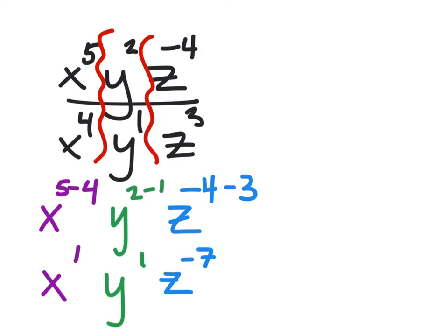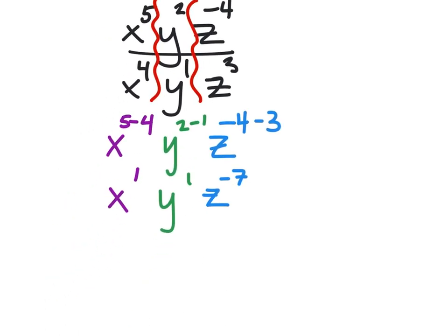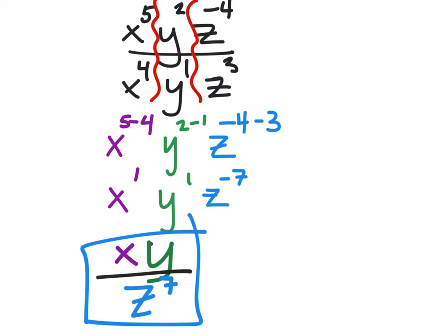Since Z has a negative exponent, we would reciprocate that though. So we would have X times Y all over Z to the power of 7. And that would be the final answer for this one.